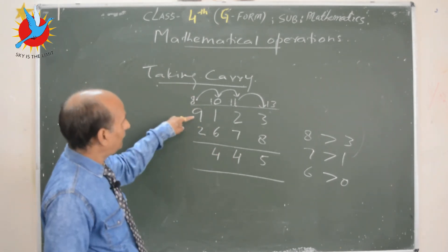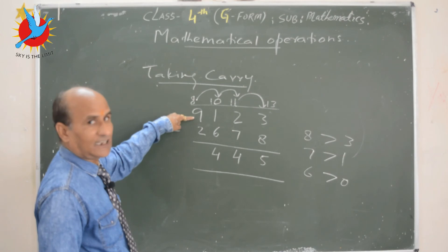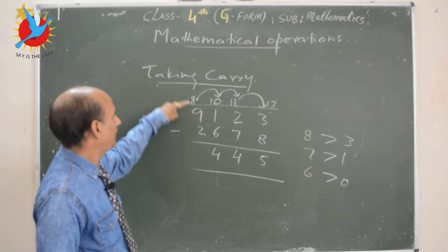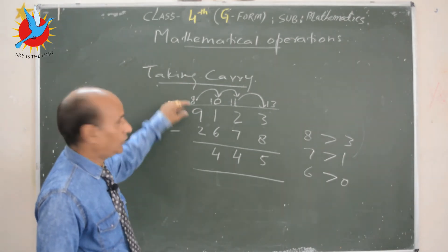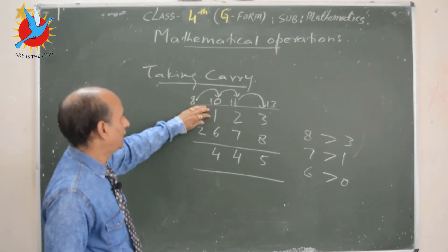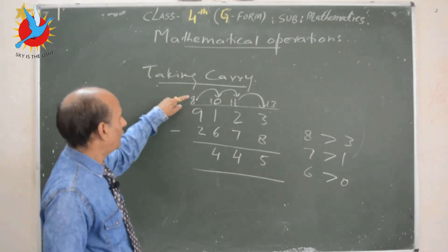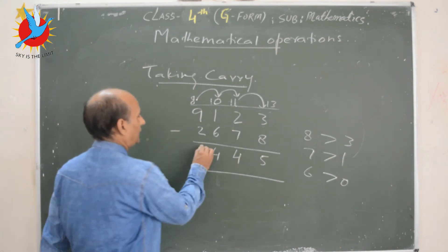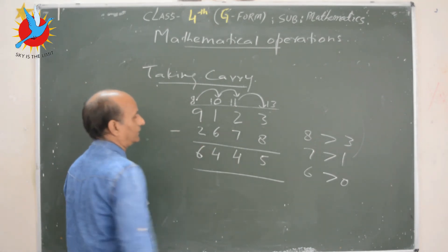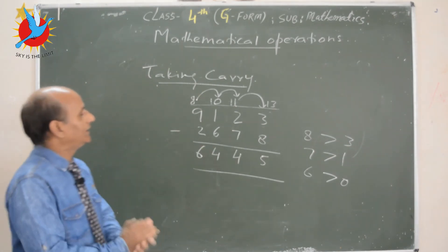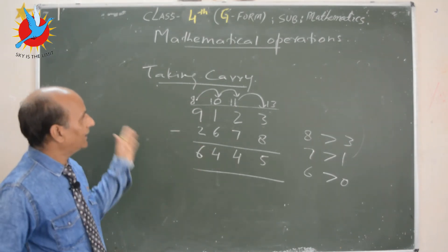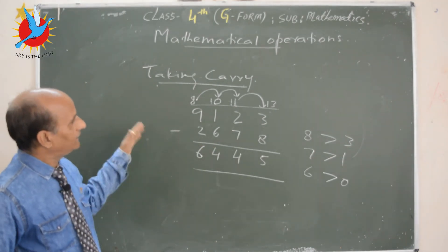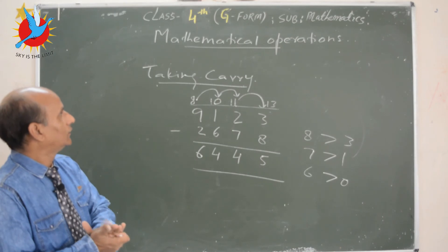How much is left in the last digit? It is 8, not 9. Now 8 minus 2 is 6. In this way you can take the carry and subtract.